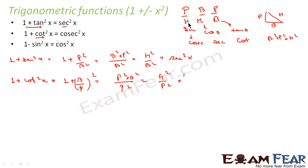H by P is cosec. So this is H by P is cosec square, because P by H is sin. So this becomes cosec square x.